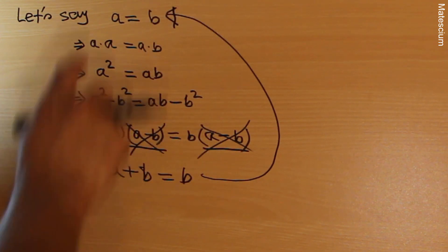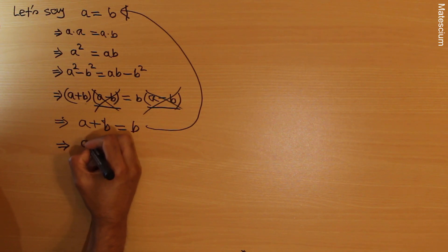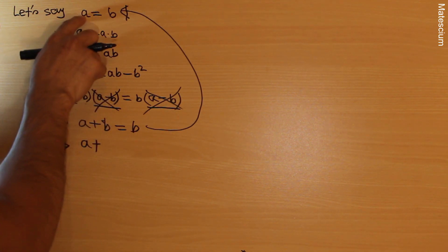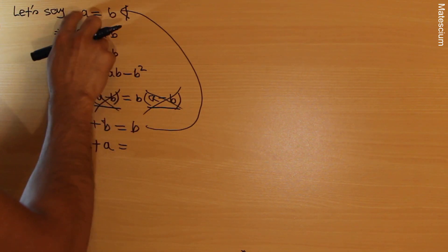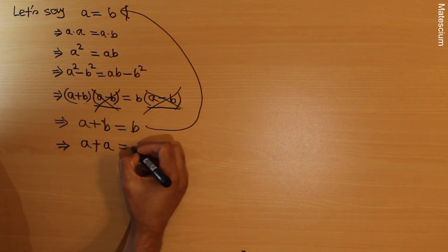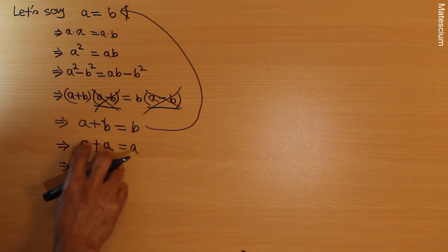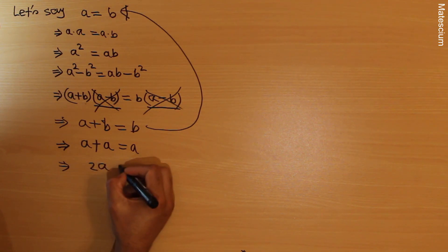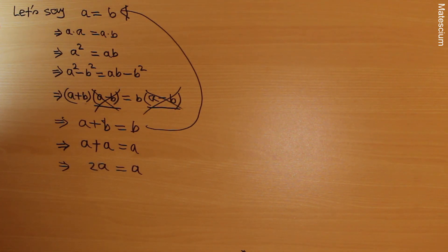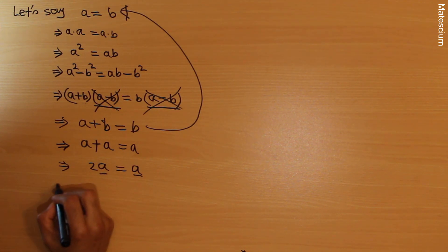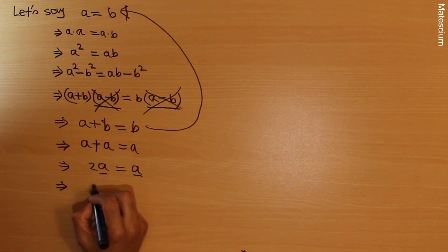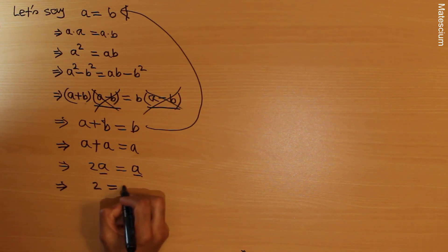Now let's go back to the initial condition. At the very beginning I said a equals b, so I can replace b with a everywhere. Replacing b with a on the left gives a plus a, and replacing b on the right gives a. So a plus a is two a, and on the right-hand side we have a. Dividing both sides by a, the a's cancel and we get two equals one.